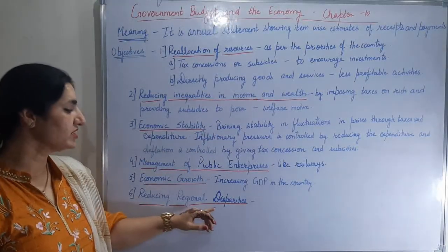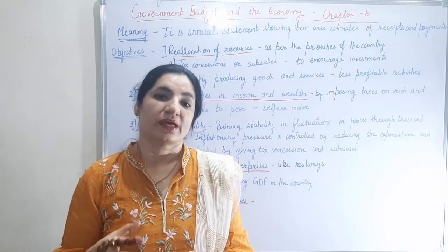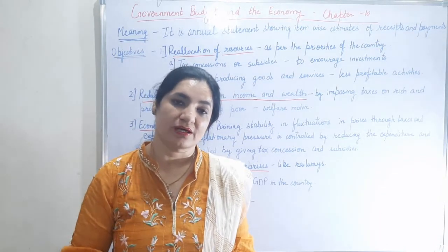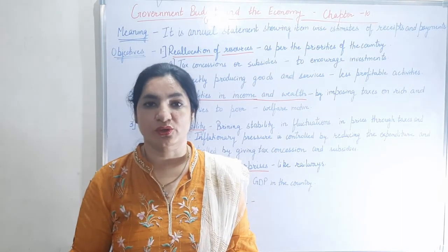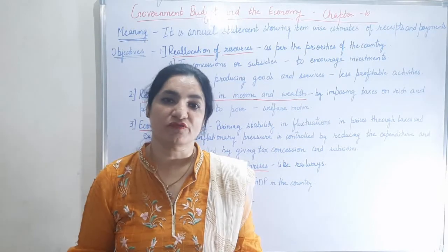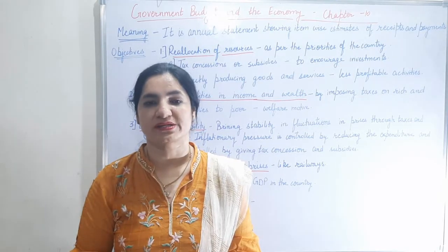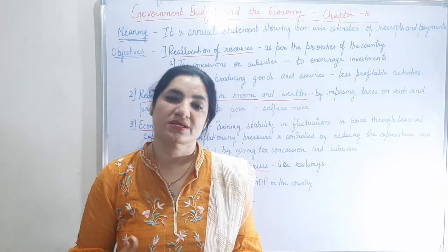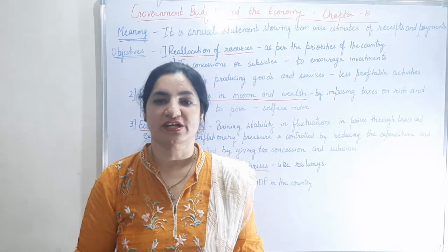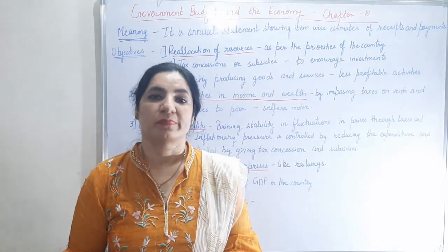Next is reducing regional disparities. In an economy like India, there are variations and regional disparities — one region may be highly developed while many others are underdeveloped. For development of these regions, government may plan to establish industries where investment is made so that nearby people can get employment. When employment opportunities are provided, people earn income. Subsidies are also given to the public so they can establish industries in rural or underdeveloped areas. With all these objectives, government plans the budget.